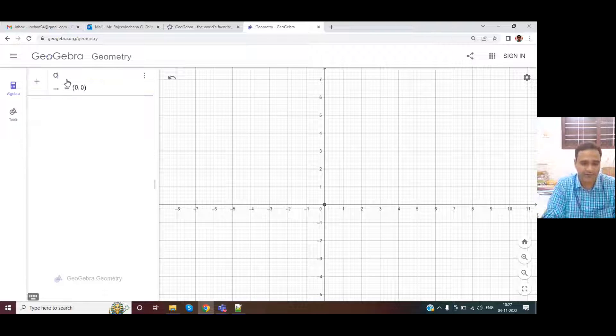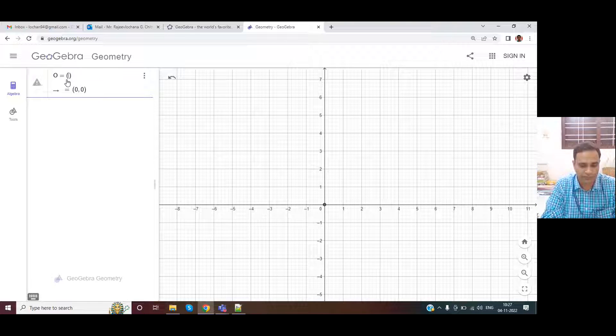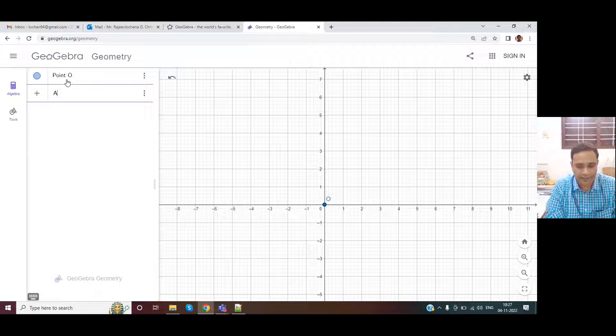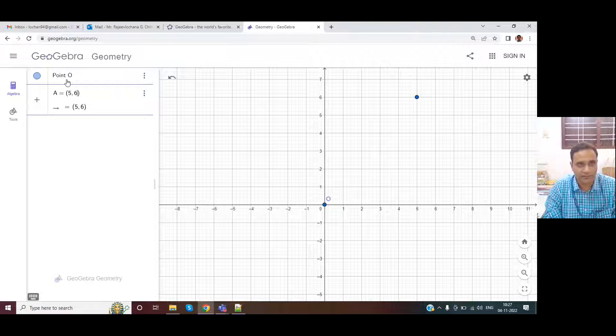I would like to define capital O is equal to 0,0 that is the origin. Capital A is another point. Let us give as 5,6 point.